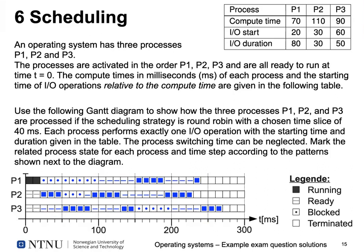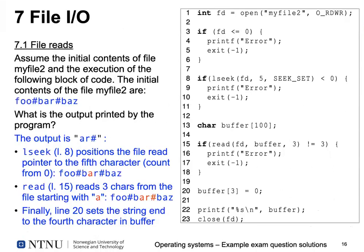This is round-robin scheduling with a chosen time slice of 40 milliseconds. The important point is that the CPU is released after 40 milliseconds — not every 10 milliseconds, which might have been tricky. Also important: each process performs only one I/O operation. Checking and rechecking all dependencies is why this relatively simple-looking task gave 10 points.